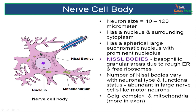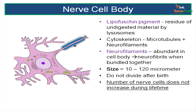The endoplasmic reticulum and ribosomes make up collections called Nissl's bodies. The Golgi complex and mitochondria are more numerous in the axon of a neuron. There is also a pigment called lipofuscin which is a residue of undigested material of lysosomes. The neuron has a cytoskeleton made up of microtubules and neurofilaments. The neurofilaments are abundant in the cell body and are bundled together. The microtubules help in transport of substances throughout the neuron. Remember, the number of nerve cells never increases in your lifetime as nerve cells do not have functional centrioles.